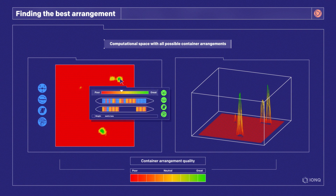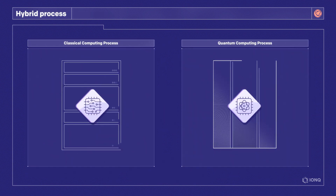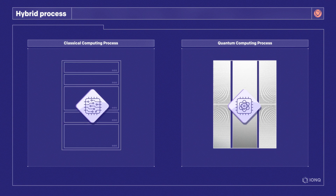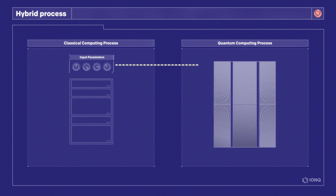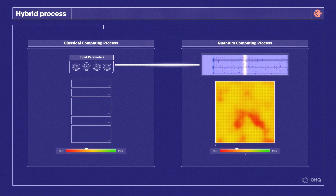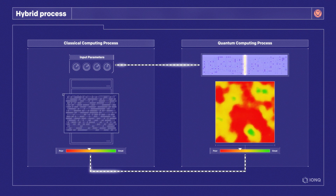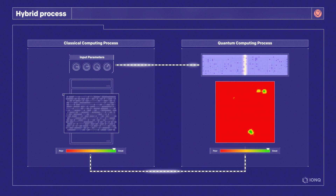Often, multiple likely solutions are identified, and the state with the highest amplitude represents the best available arrangement. This heuristic cargo optimization is a hybrid process, where classical and quantum resources work together. The classical computer selects input parameters that influence how the quantum circuit behaves. The circuit drives the computational space to amplify the amplitude of the best combinations of containers. The result of each iteration is sent back to the classical computer, where it is evaluated and new input parameters are selected. This loop runs until a satisfactory combination is identified.